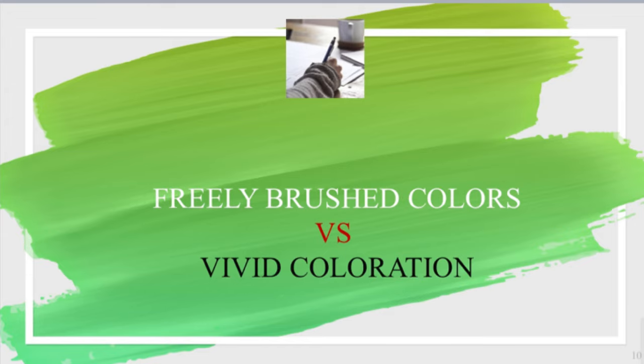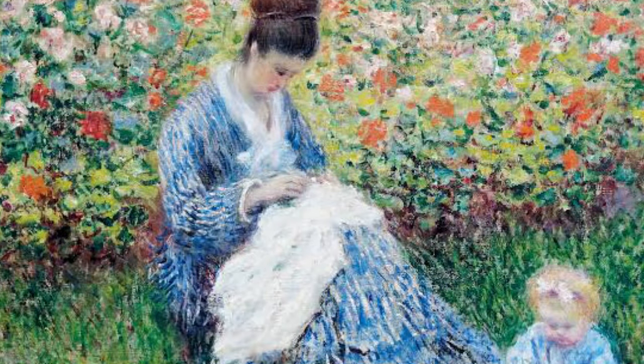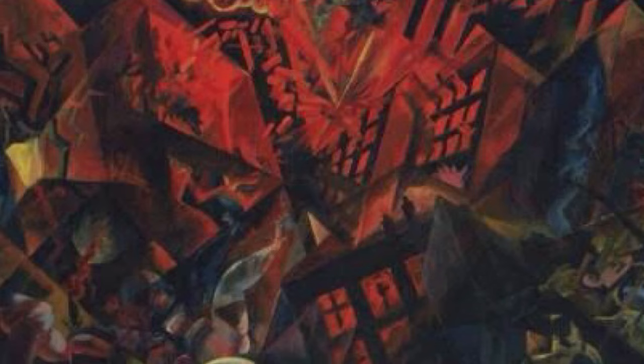The third characteristic: in impressionism they use freely brushed colors, while in expressionism they use vivid coloration. Freely brushed colors means the paint or colors are not properly blended or mixed, and that is the reason why impressionism paintings are blurry. In expressionism, they use vivid colors that are so bright, powerful, and strong — we can say the color choices are OA or exaggerated. Because if the colors are not strong and powerful in expressionism, they will not be able to express what they want to express.